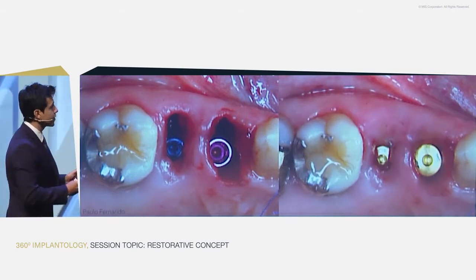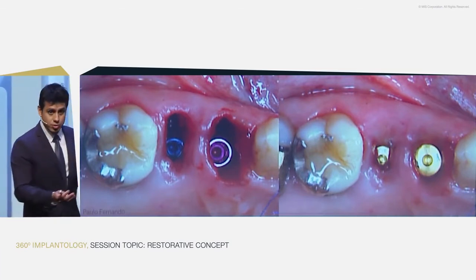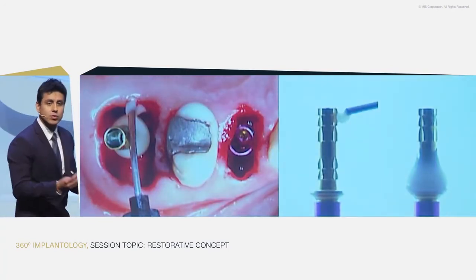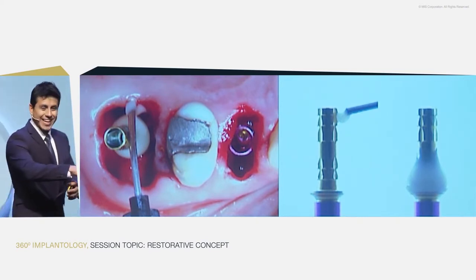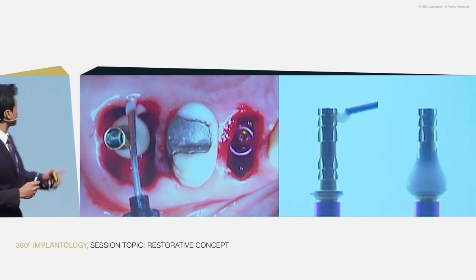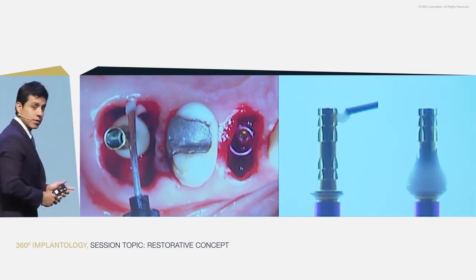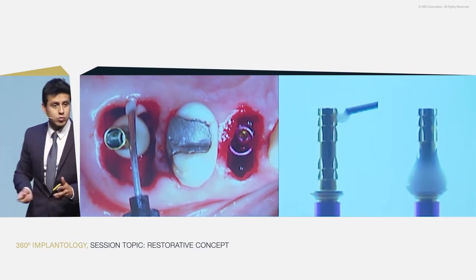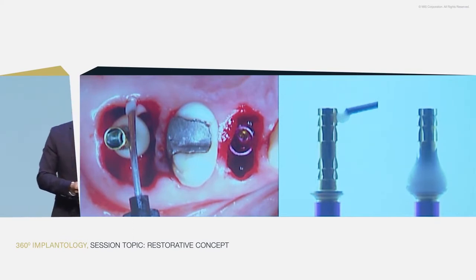When we have this kind of tissue, we have to work a lot — maybe three or four appointments to deliver a good restoration with good contour. But we can accelerate this process. We can take a provisional abutment, create a layer on top of it, and place the provisional abutment with flowable composite on top of the implant.